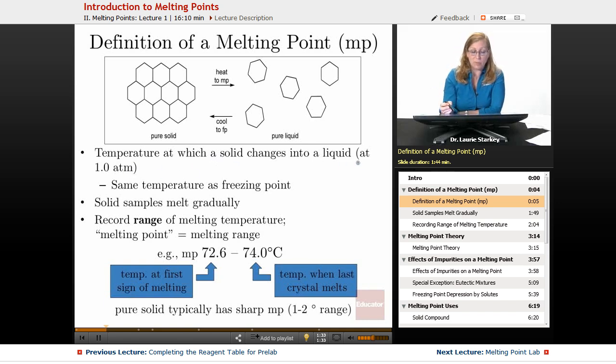So the definition of our melting point is the temperature at which the solid changes into a liquid at one atmosphere. And it's the same temperature as the freezing point. This temperature to do this transition is the same in both directions. We would call it the freezing point for the liquid going to the solid.